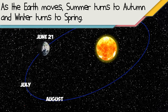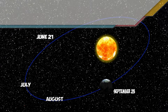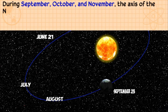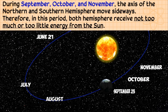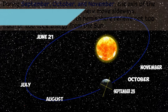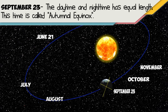As the Earth moves, summer turns to autumn or fall. During September, October, and November, the axis of the northern and southern hemispheres moves sideways, so both hemispheres receive not too much or too little energy from the Sun. On September 23, the daytime and nighttime are of equal length. This time is called the autumnal equinox.